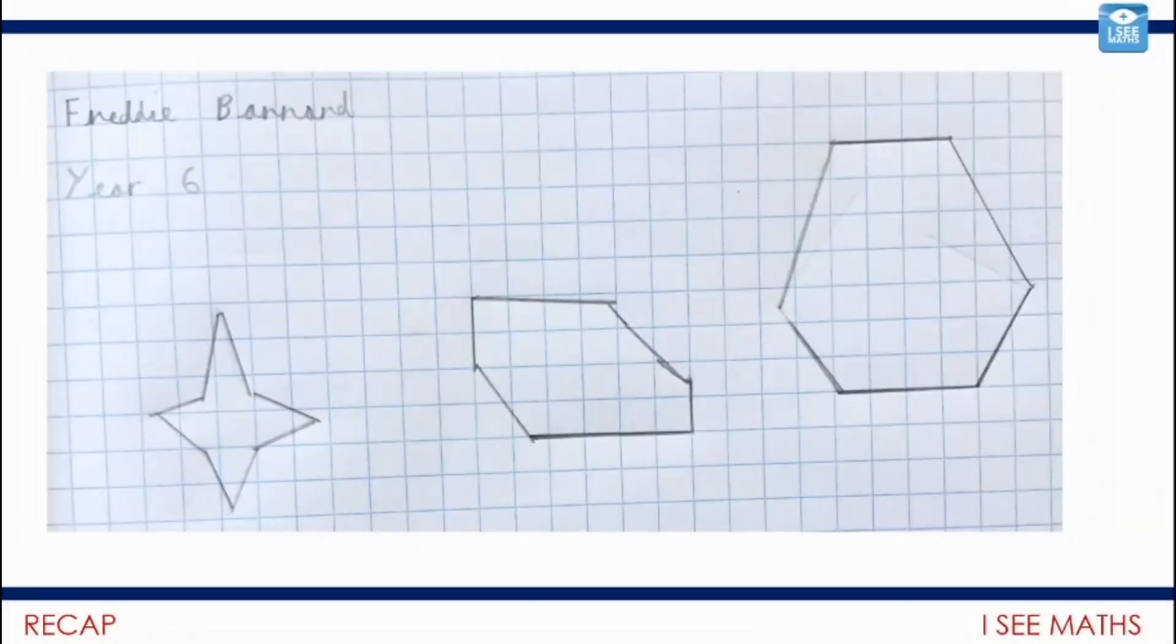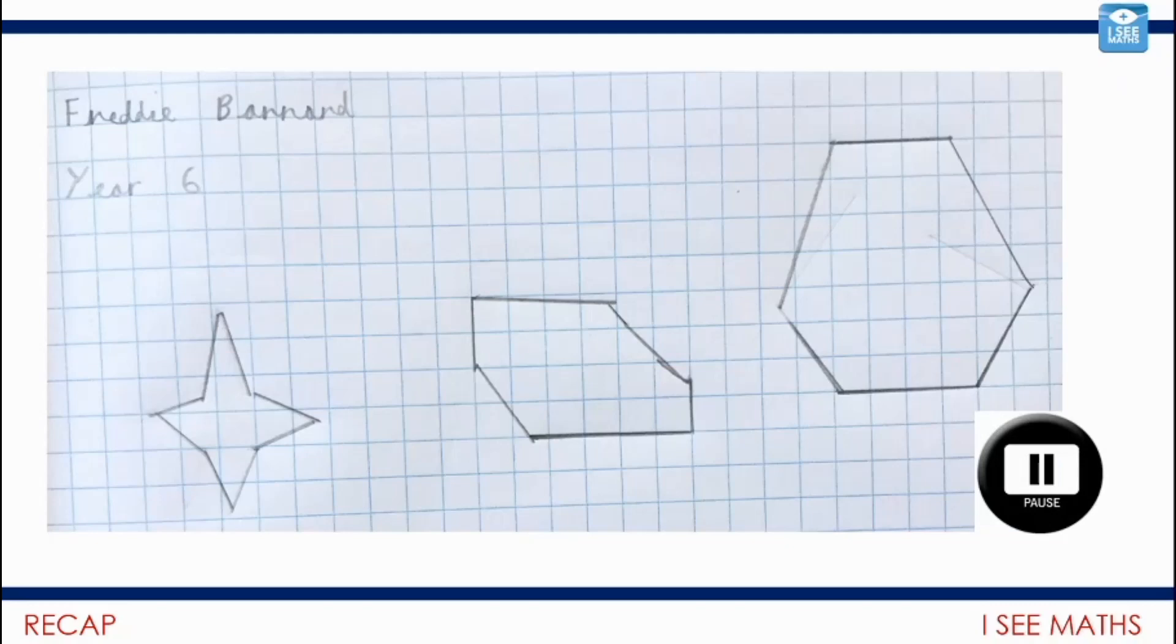Well there's only one place we can possibly start today and that is with Freddie and his odd one out example. So have a look at these shapes. Pause the video. Which one is the odd one out and why? Can you think of a reason why each one might be the odd one out? Pause the video and have a think.